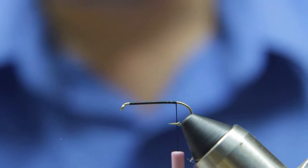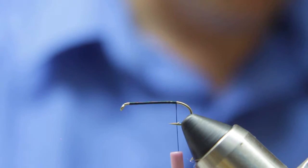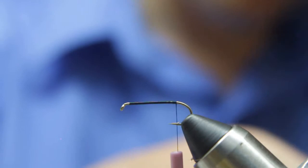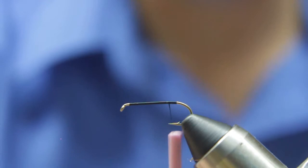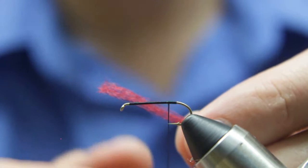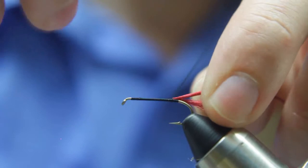Now that we've got the thread back to the bend of the hook, we're going to take some of this Antron yarn. And I want to once I get to the bend of the hook, I want to bring it back over to about the point of the hook. So the thread is at the point of the hook. And then I'm going to take my Antron yarn and wrap it over around the thread. And then I'm going to wrap the thread around the hook back over to the bend.